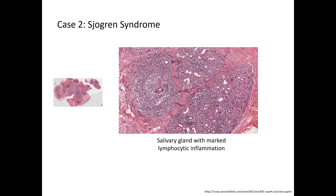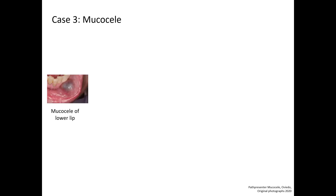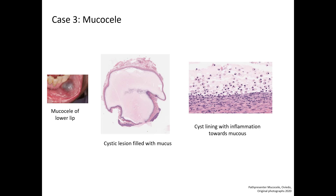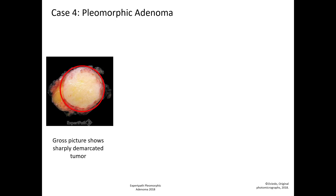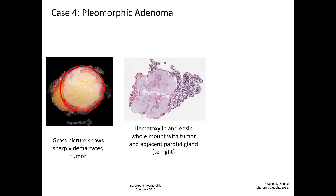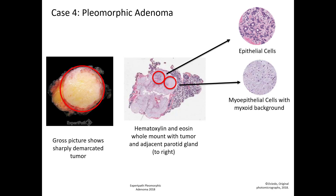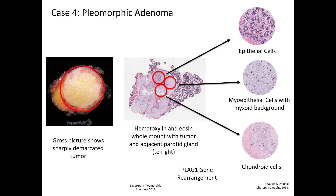Case 2 is Sjogren's syndrome — at high power, you can see the salivary gland has a marked lymphocytic inflammation. Case 3 is mucocele — on histology, there is a cystic lesion filled with mucus; high power demonstrates the cyst lined with inflammation toward the mucus. Case 4 is pleomorphic adenoma — the gross picture demonstrates a sharply demarcated tumor. The whole mount shows the tumor on the left and normal parotid gland on the right. The tumor is composed of epithelial cells, myoepithelial cells with a myxoid background, and chondroid cells. Pleomorphic adenoma generally has PLAG-1 gene rearrangement.